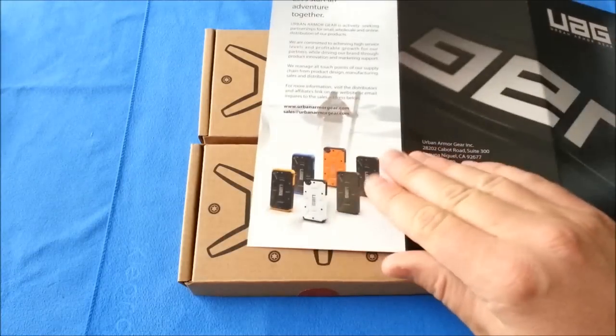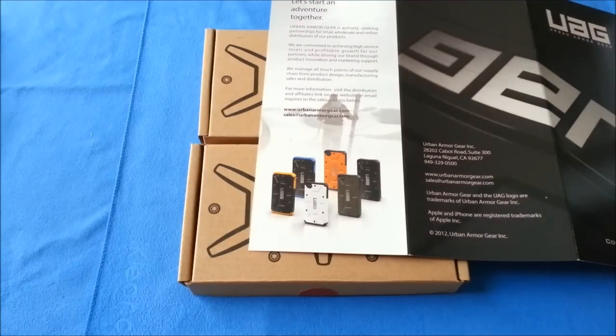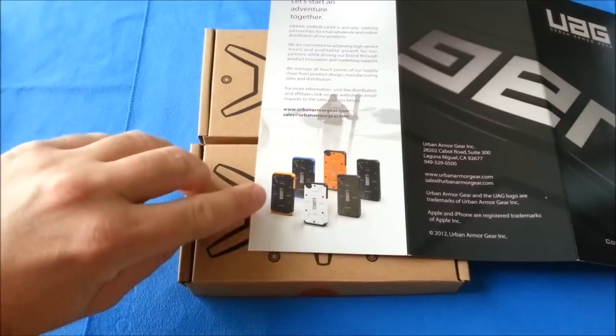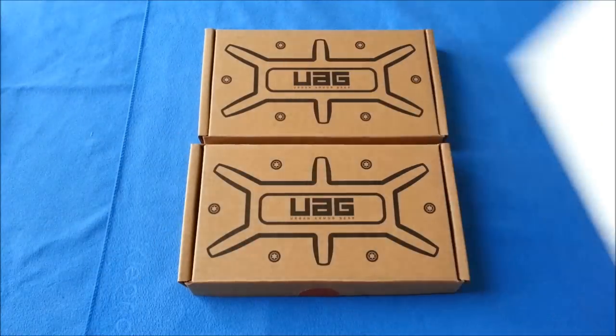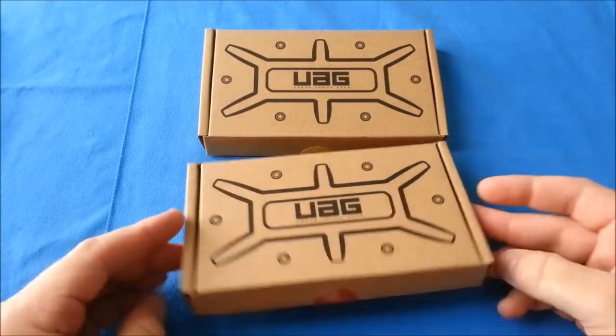Now, these cases are available in several colors. They actually sent me two colors out to review. They sent me the Outland, which is the orange and black, and the Rogue, which is black and yellow. So let's go ahead and dive right into the packaging and take a look.